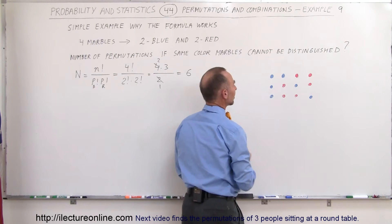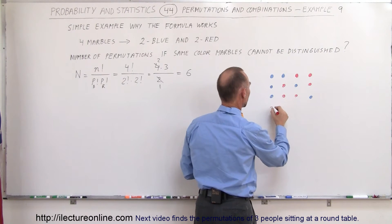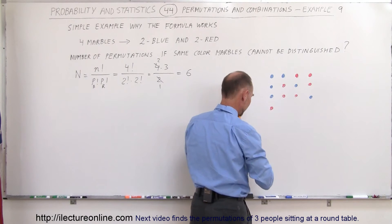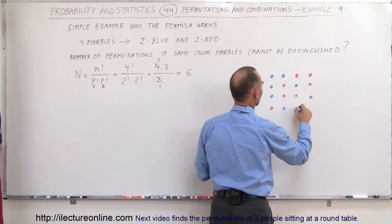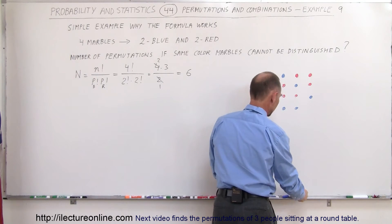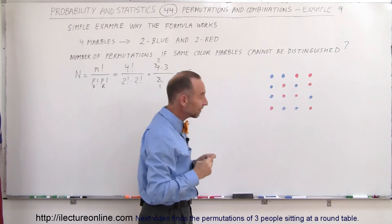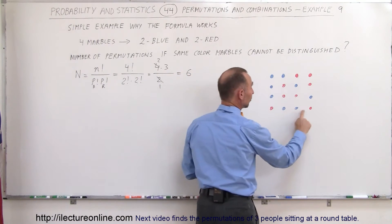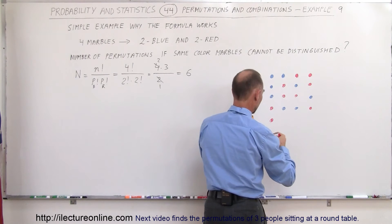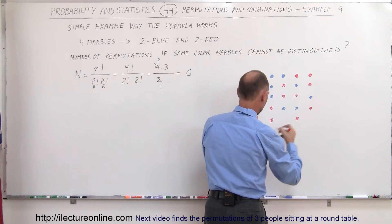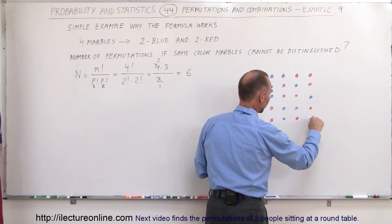Now let's move one of the reds into this position. So we move a red in here, and let's see if we can have a blue in this position and a blue in this position — and we have a red in this position, so we haven't had that permutation yet. Now what we can do is move this blue over there with the red in this position — so red goes there, this red moves over there, this blue goes over here, and this blue goes there.